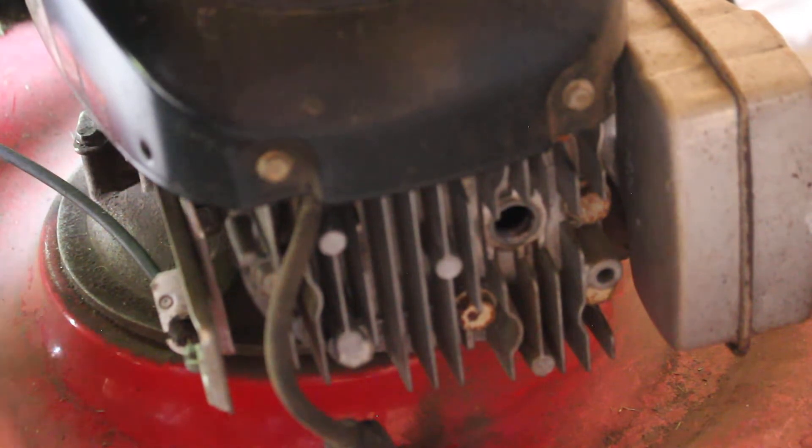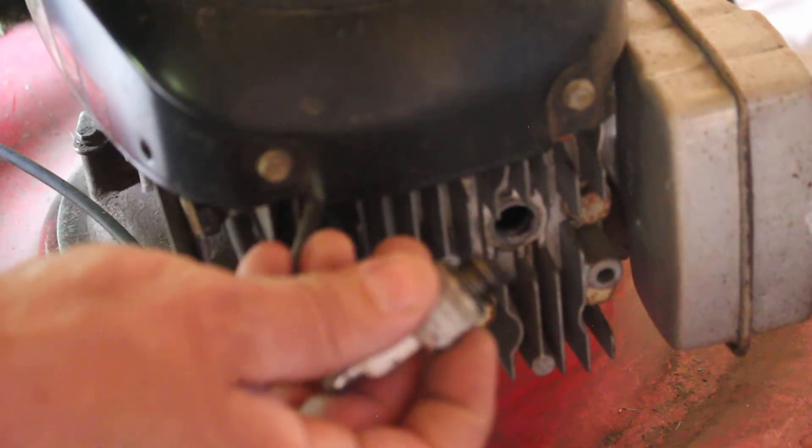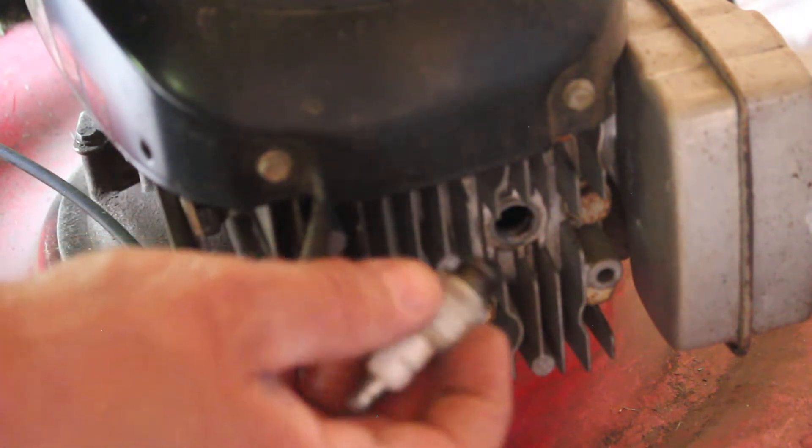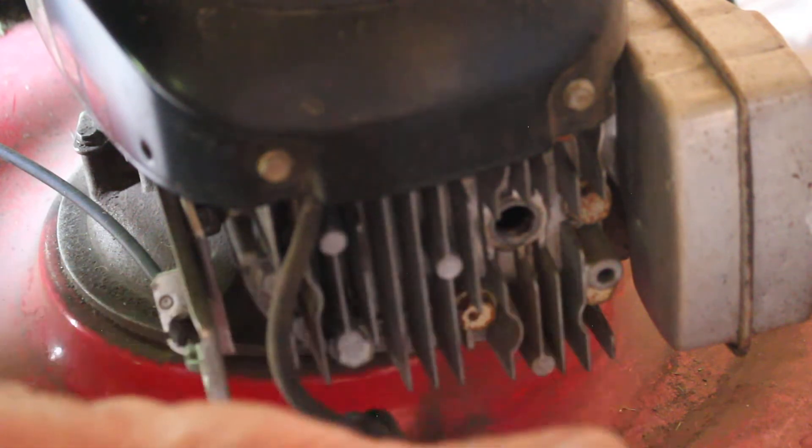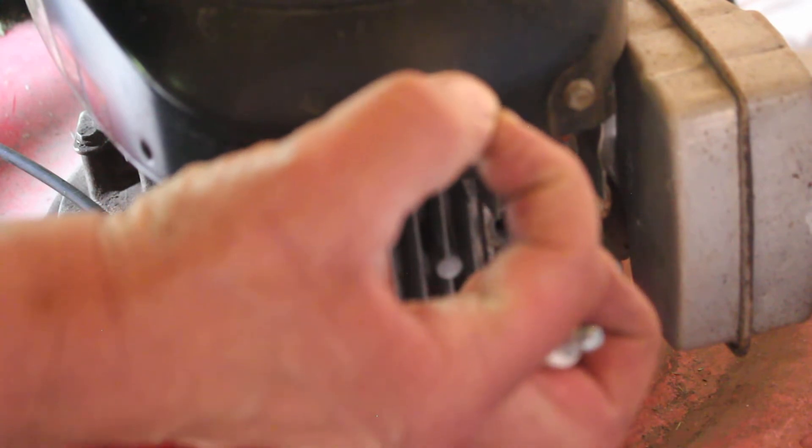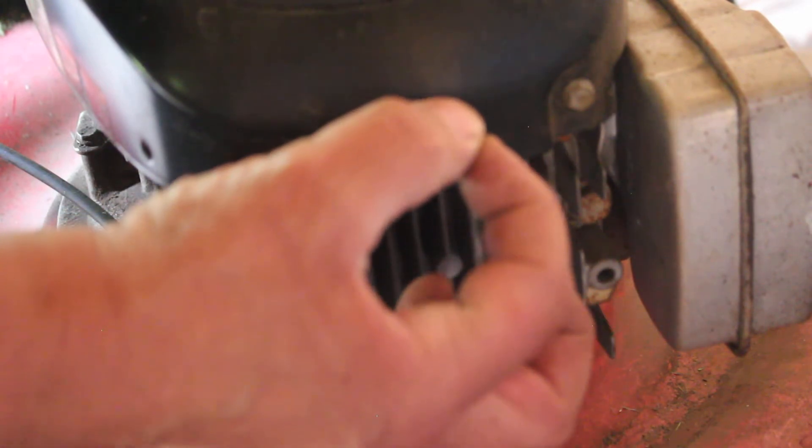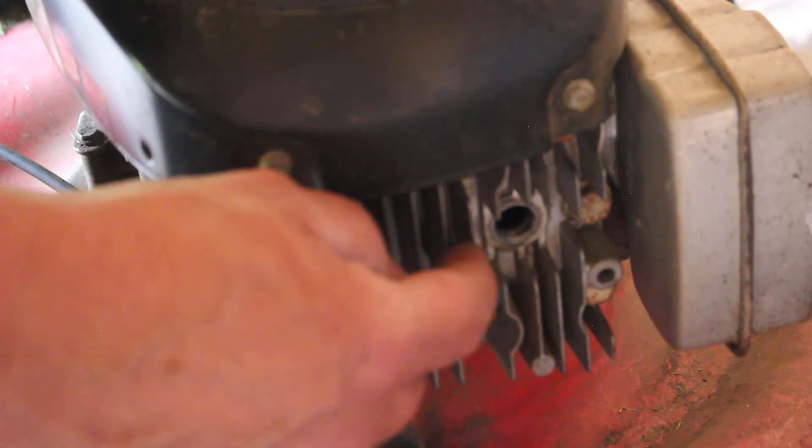Remember that a compression gauge has the same threads on the end of it as what the spark plug does, and so it threads in there just like a spark plug except it's got an air hose coming out of it with a gauge. The gauge measures PSI, pounds per square inch. It measures how much pressure is being created inside the cylinder and you can get a reading.